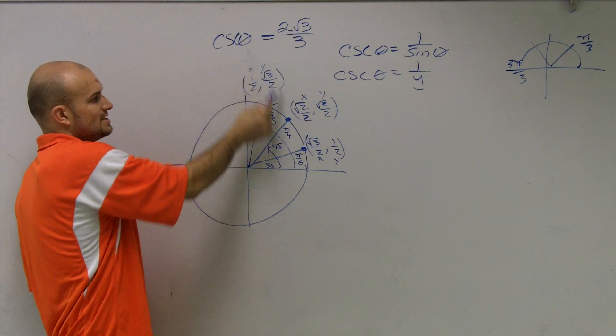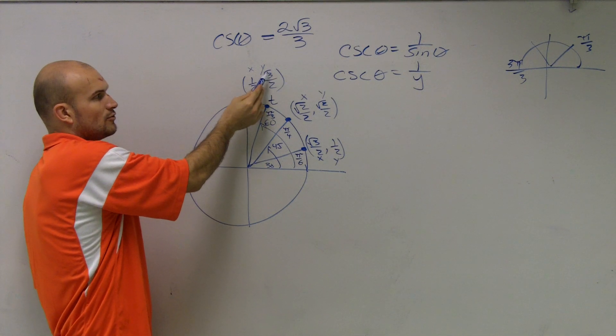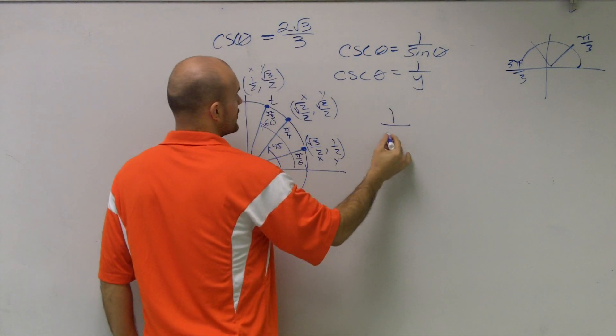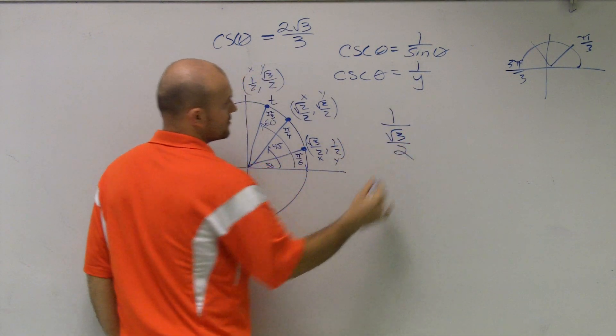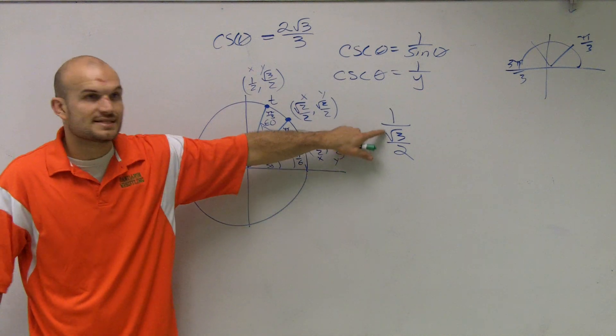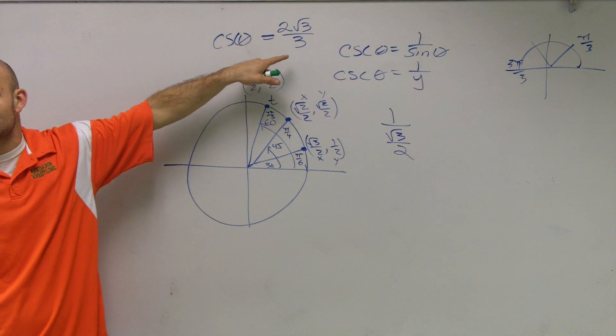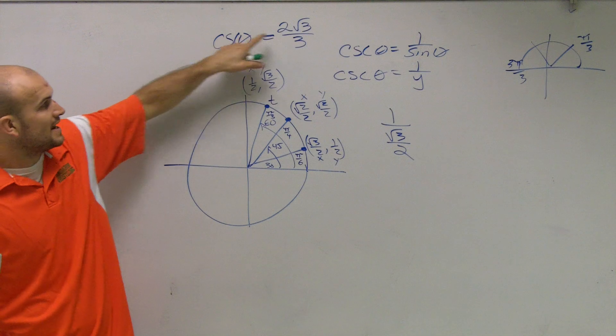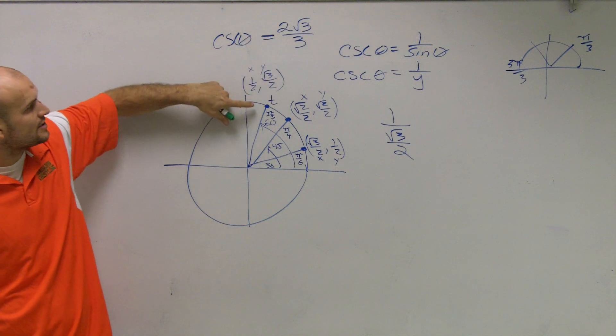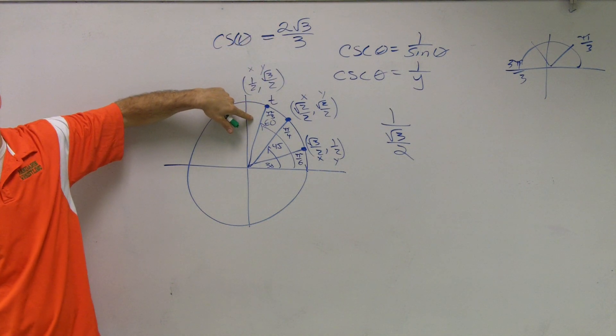But if I say the cosecant of 60 degrees, which would be 1 over radical 3 over 2? Well, when I simplify this, I'm going to obtain this answer. So therefore, the cosecant of this coordinate point, theta is going to have to equal 60 degrees.